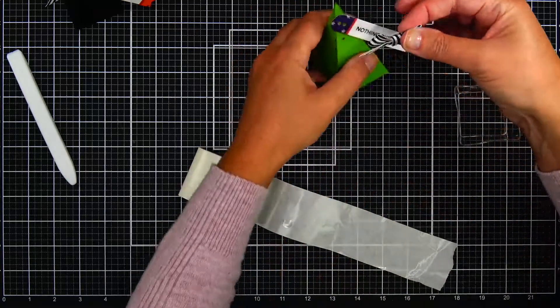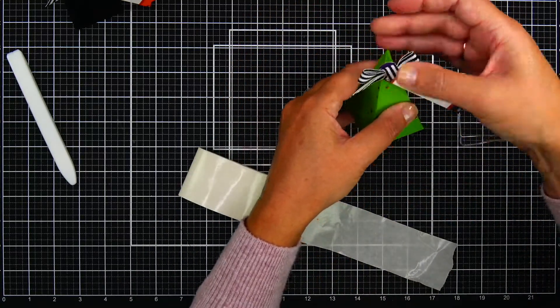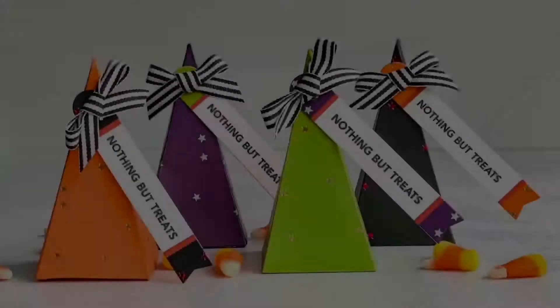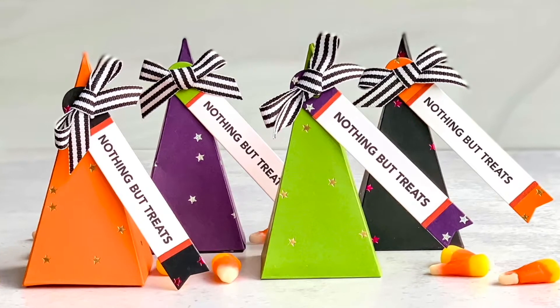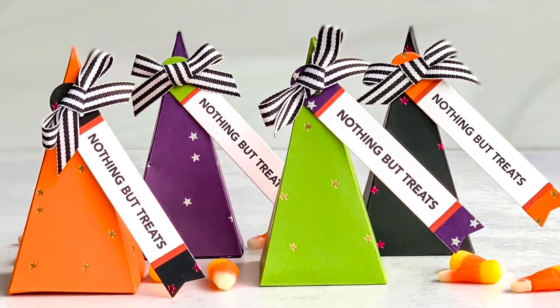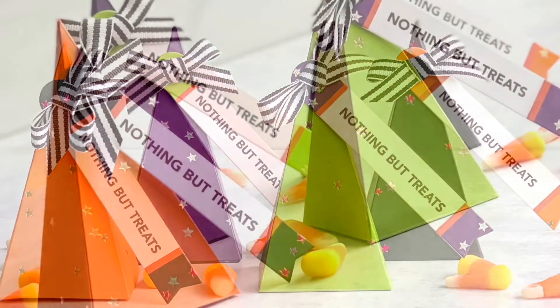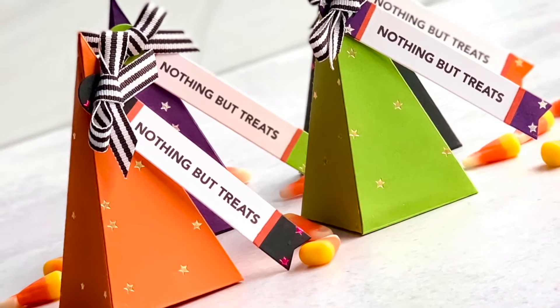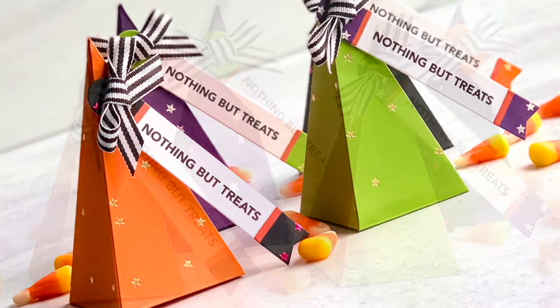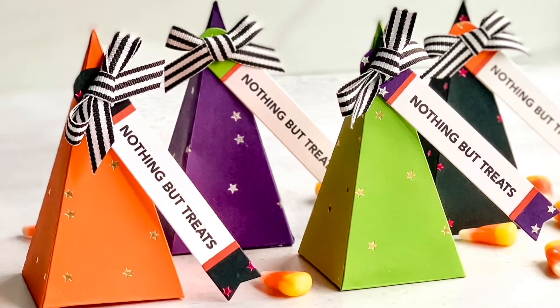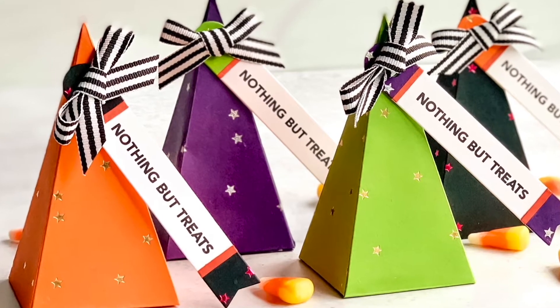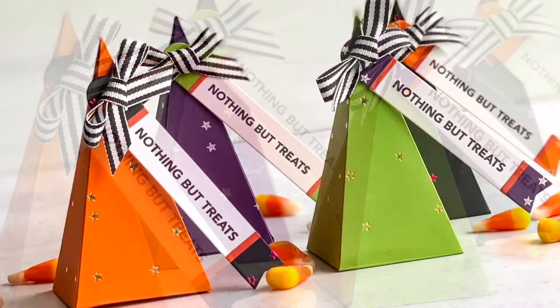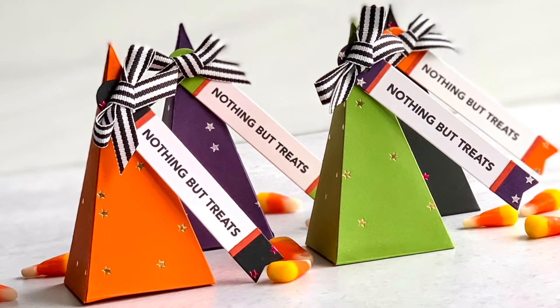I'm going to get that last tag and bow put on, and this is going to finish up my candy boxes. I love how well these products work together—the tiny stars background foiled onto cardstock, which was made into pyramid boxes and finished up with the farmhouse tags. So adorable. All of these products are now available in the Ellen Hudson shop, and I'll leave a link to the shop in my video description.